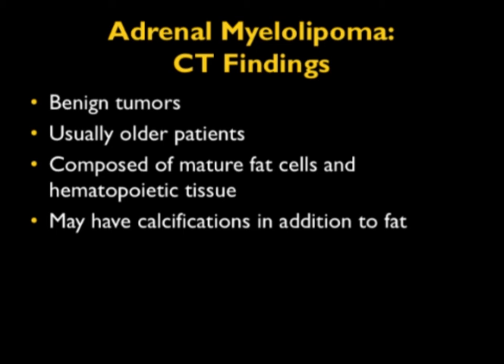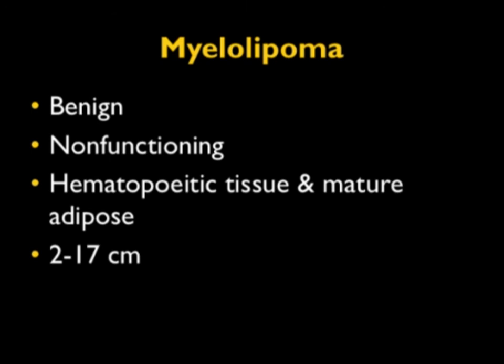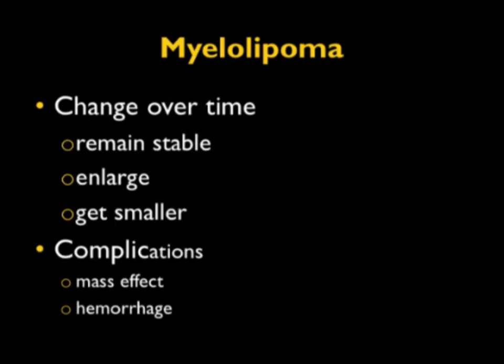It's composed of mature fat cells and hematopoietic tissue. It may also have calcifications, particularly punctate calcifications. What's very important about myelolipoma is they're always benign — they have no malignant potential — but they may be hard to diagnose because they have different amounts of fat. They're benign, but the range of sizes is from a centimeter or two up to 17 to 20 centimeters.